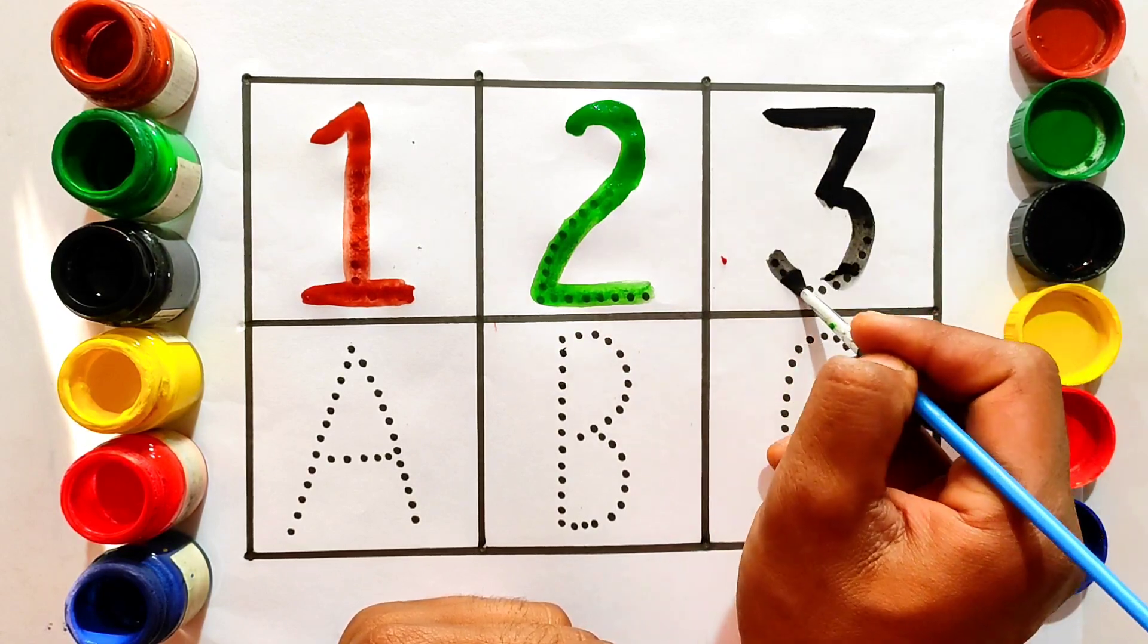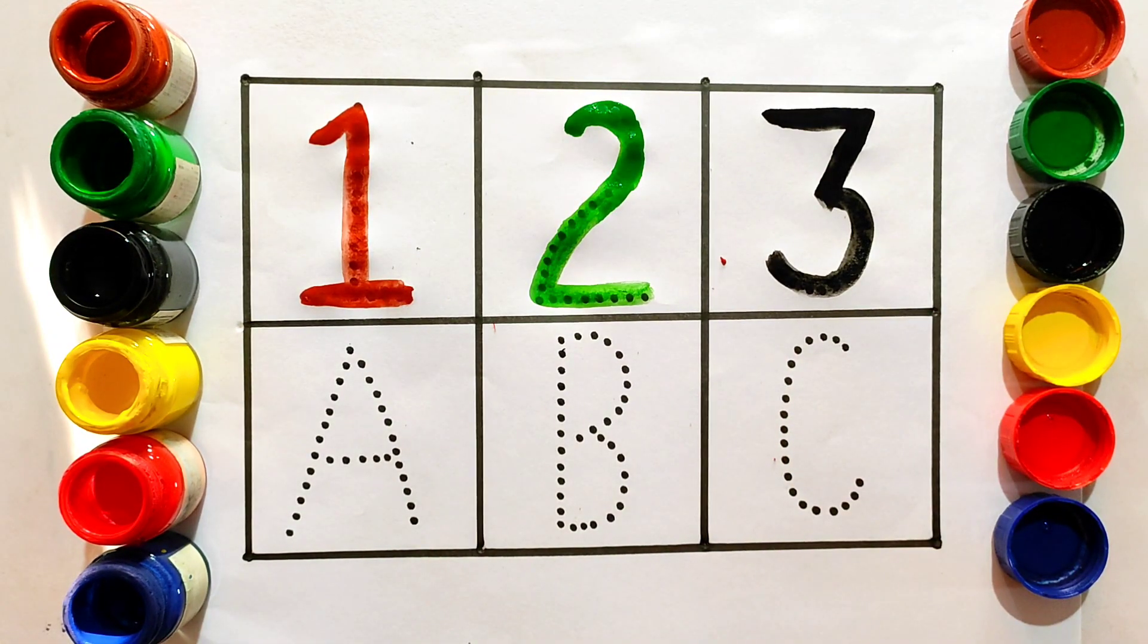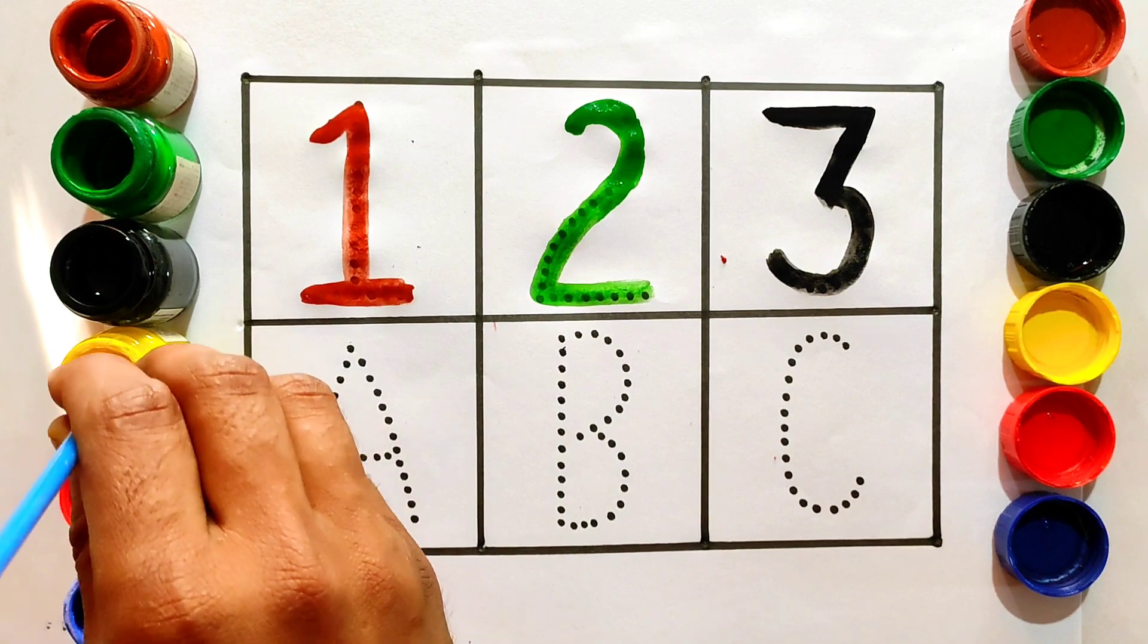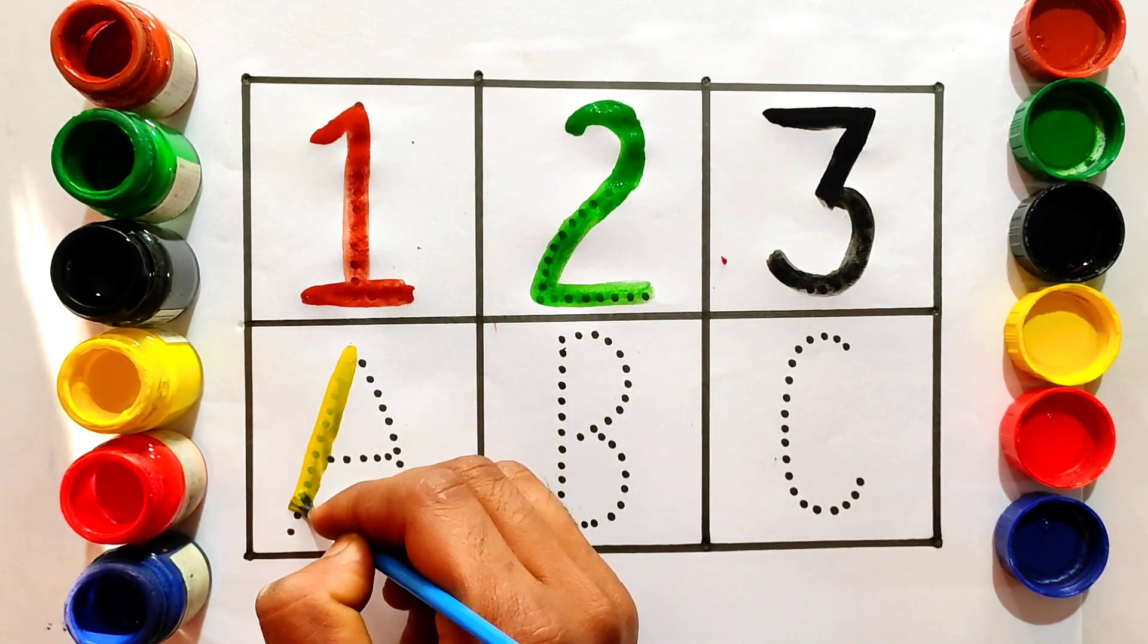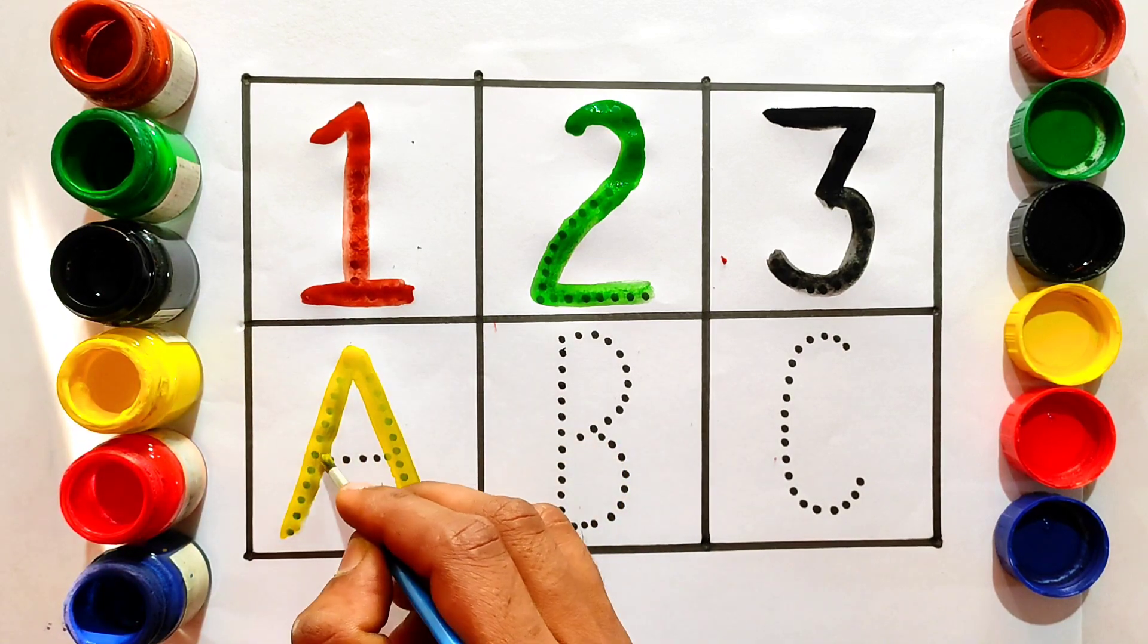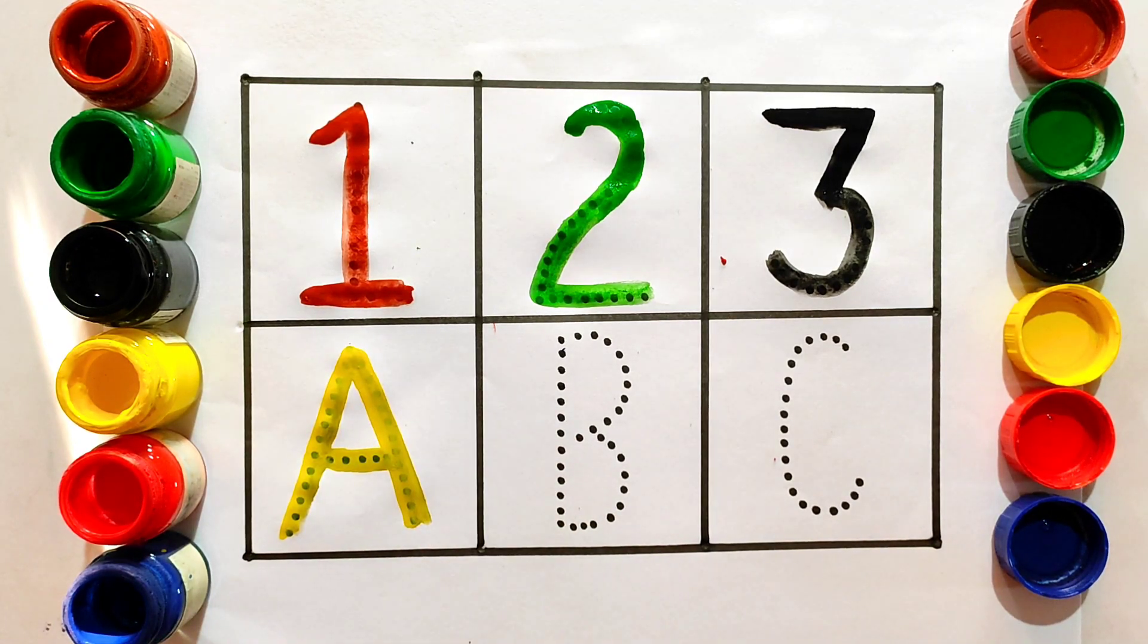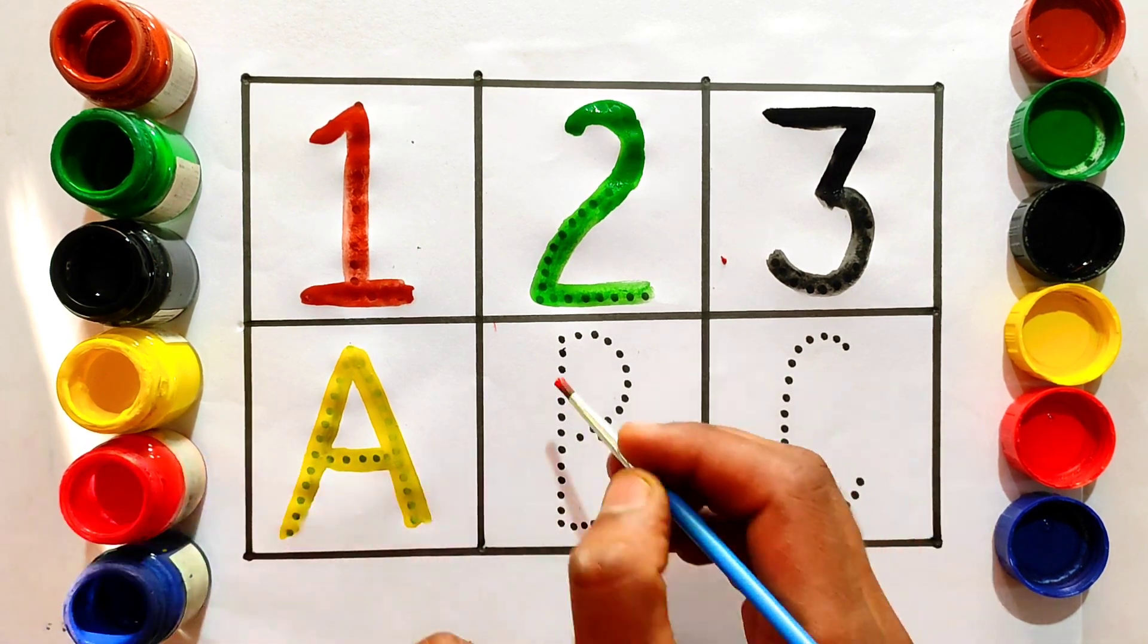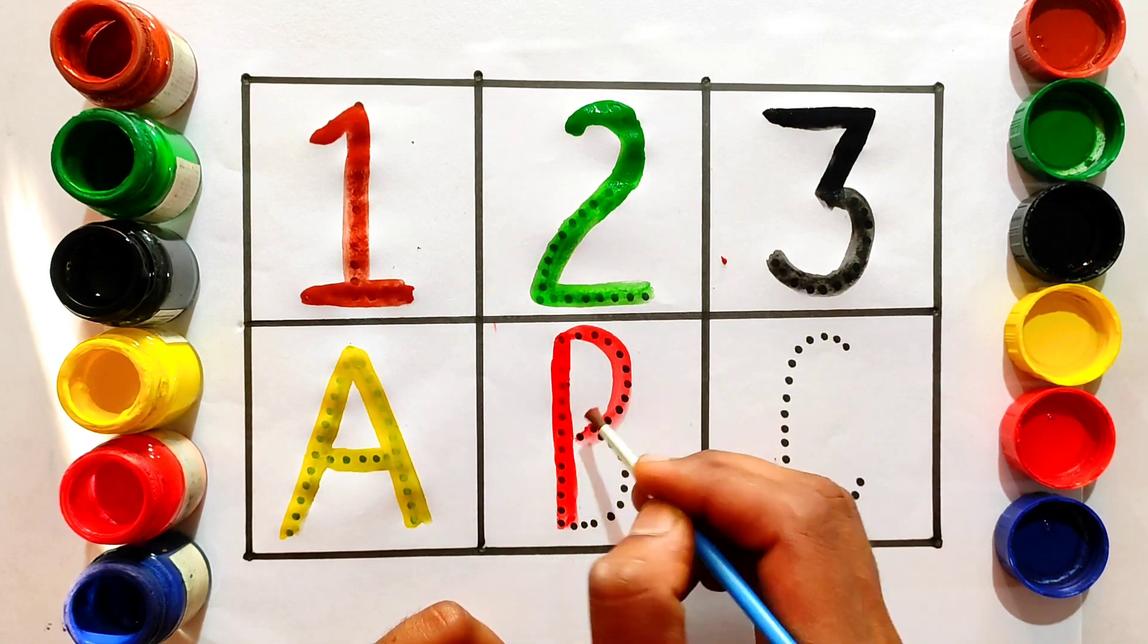T-H-R-E-E, three, three. A, A for apple, A-double P-L-E, apple. B, B.